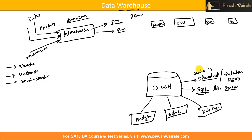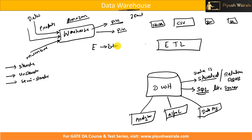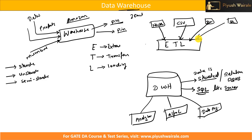For that, we have the ETL process. ETL stands for Extract, Transform, and Load. First, we extract data from multiple sources, then we transform that data into a required format, and then we load it into a data warehouse. This is the ETL process — extract, transform, and load.